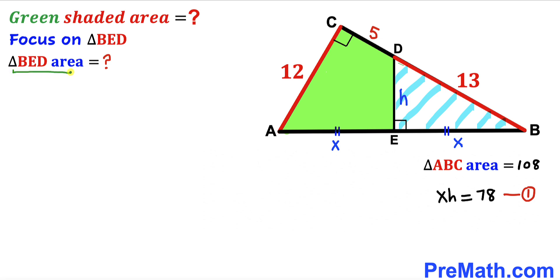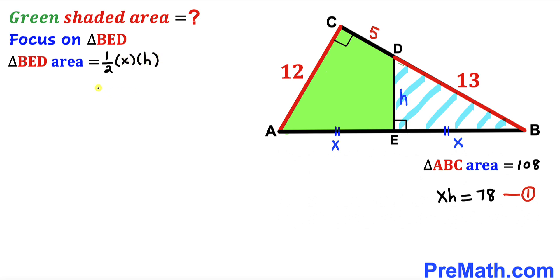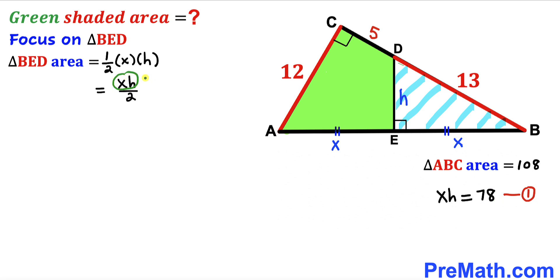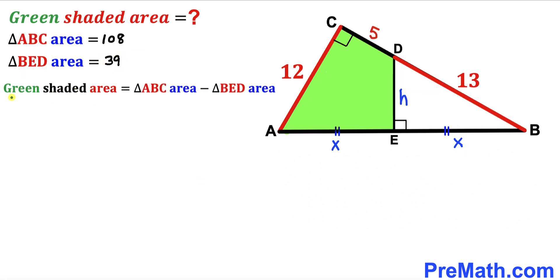Now let's calculate the area of triangle BED. Using area equals one-half times base times height, where the base is x and the height is h, the area of triangle BED equals one-half times x times h, which is x times h divided by 2. Substituting from equation 1, that is 78 divided by 2, which equals 39 square units.